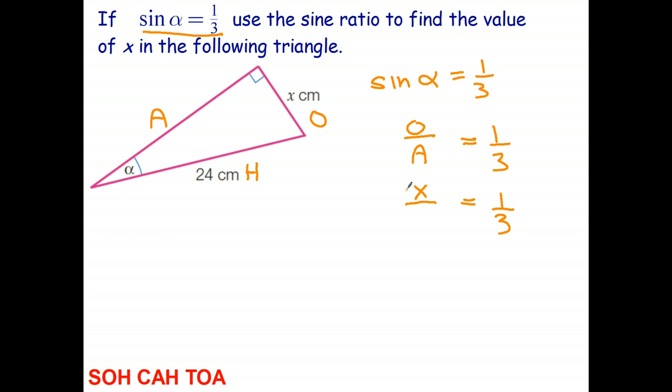And the, oops, I just made a mistake, I'll just fix that up. Sine, of course, is opposite over hypotenuse, but I wrote an A there, because I'm silly. Opposite over hypotenuse. And the hypotenuse for this triangle is 24.